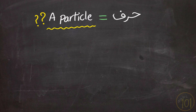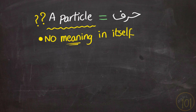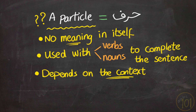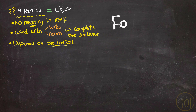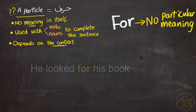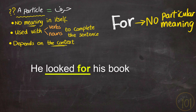But what is a particle exactly? A particle is a word that has little or no meaning in itself. It is used with nouns or verbs to complete the meaning of a sentence, and the meaning of the particle will depend on the word with which it is used. For example, the word 'for' is a particle — in itself it doesn't really have much meaning. But when we say 'he looked for his book,' the word 'for' gave the meaning of 'trying to find' to the verb 'look.'